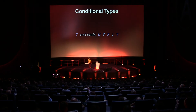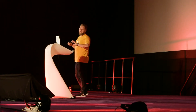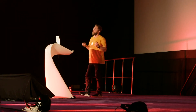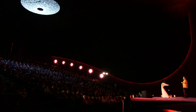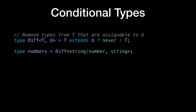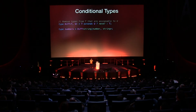Now for conditional types. If T extends U — if it's a subtype of U — we can provide type X, otherwise type Y. For example, we can create a custom type called Diff that removes from T any types assignable to U. If T extends U, we return never — a special keyword meaning nothing is added to the type. Otherwise we return T. So if we have a union of string and number and we Diff by string, we get number back.